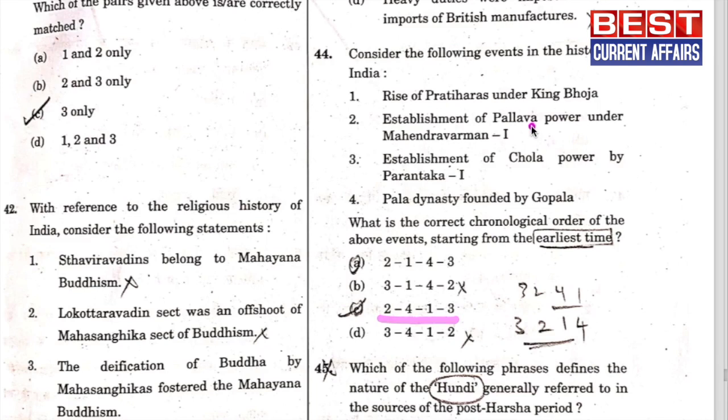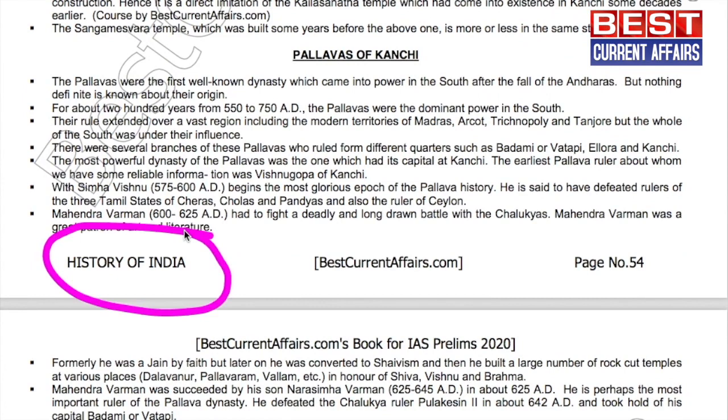The correct answer is C: 2, 4, 1, 3. The Pallava power was the earliest, then came the Pal dynasty, then the Pratihar rise, and then the establishment of Chola power. Now I will show all these four events in our history booklet.